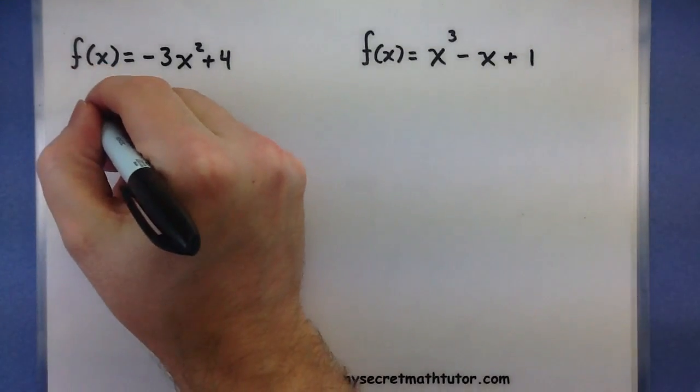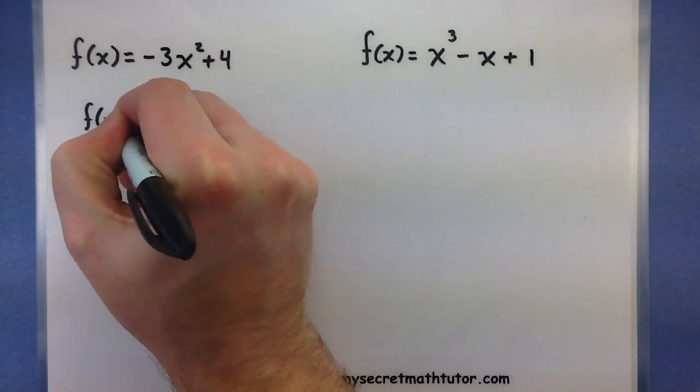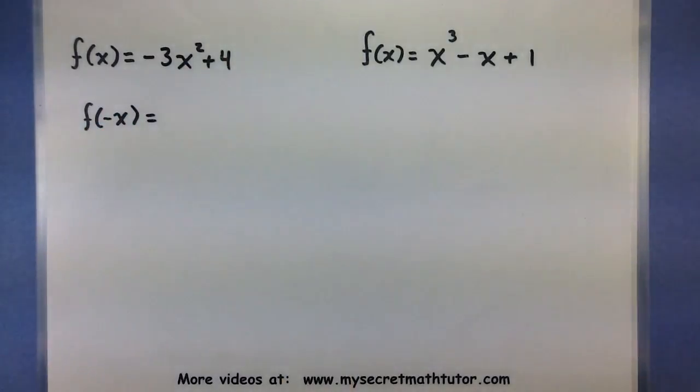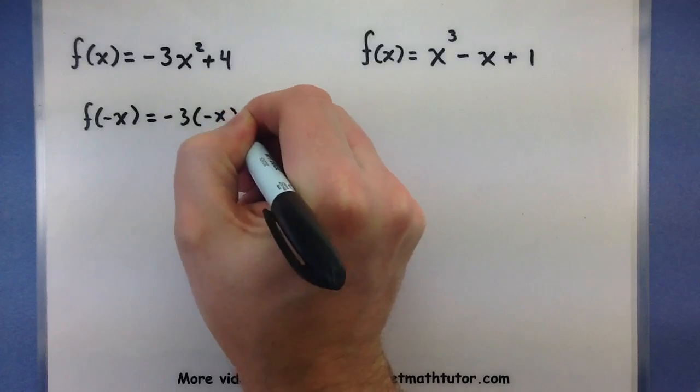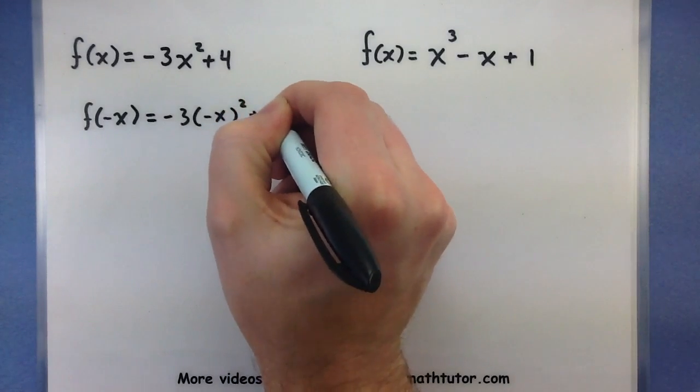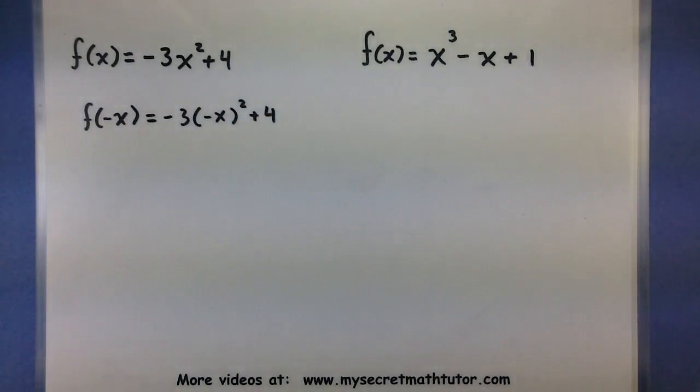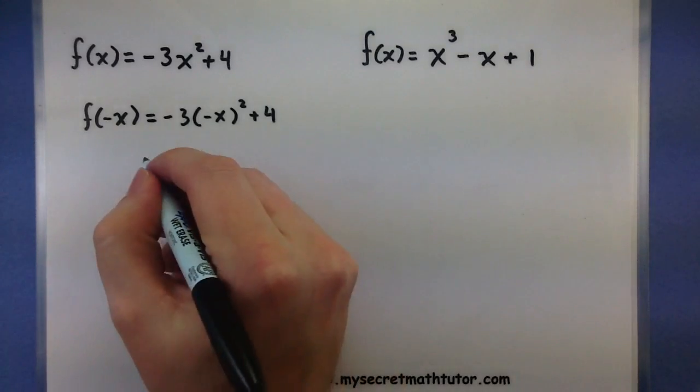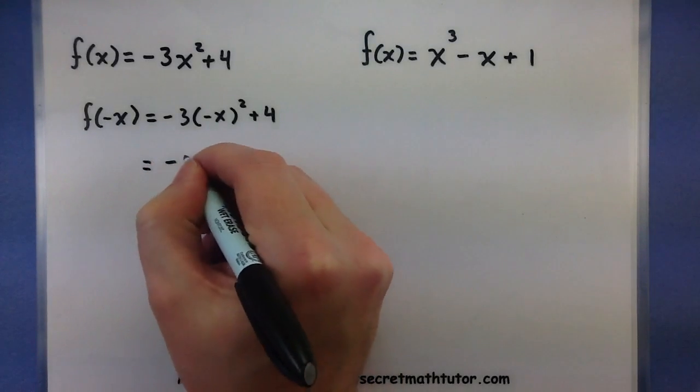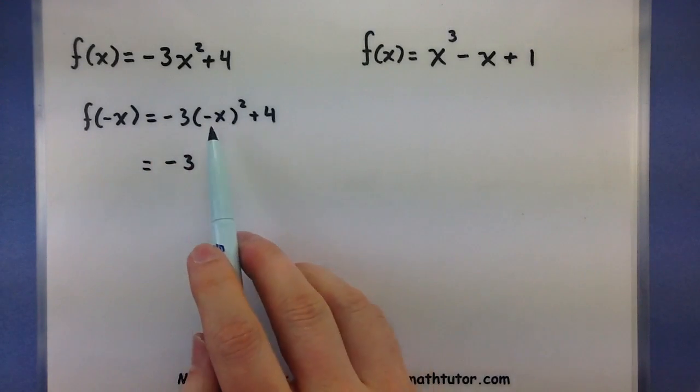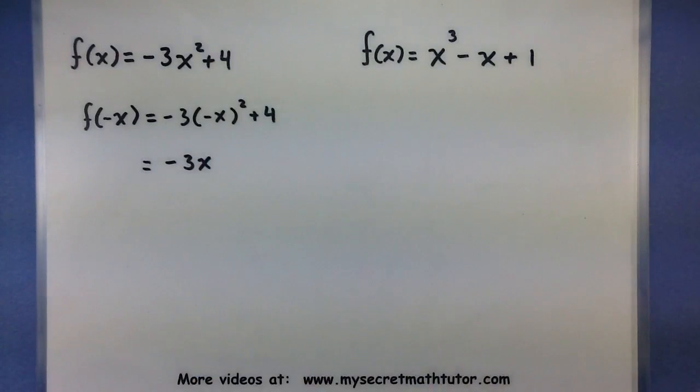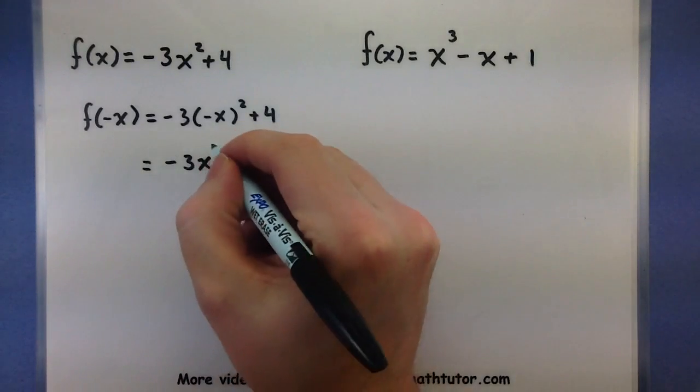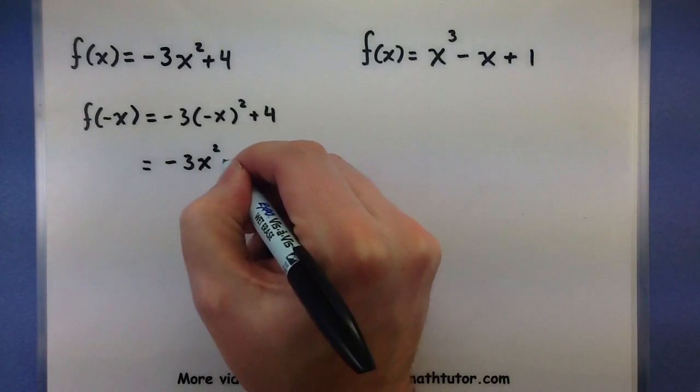We'll apply these tests by grabbing our function and plugging in a negative x. So everywhere we see an x, we'll substitute that negative x in there. All right, now we'll try and simplify this. And I can see that this one simplifies pretty good. Negative x squared would actually be just x squared. This is because negative x times negative x, the negative signs cancel and they are gone. So negative 3x squared plus 4.